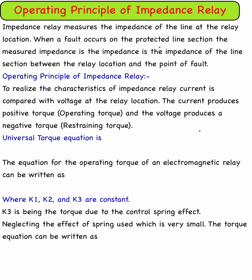First is the impedance relay. The impedance relay measures the impedance of the line at the relay location. When a fault occurs on the protected line section, the measured impedance is the impedance of the line section between the relay location and the point of fault.